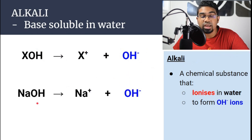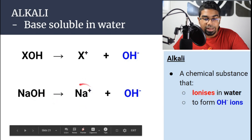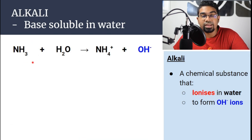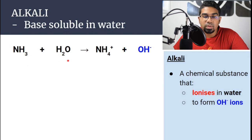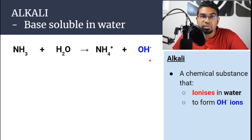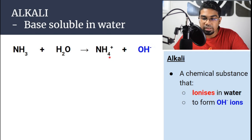For example, sodium hydroxide: when sodium hydroxide is dissolved in water, we get Na+ and OH⁻. This is also in accordance with Arrhenius theory. Another example is ammonia, NH₃. When we dissolve ammonia in water as aqueous ammonia, we get ammonium ion NH₄+ and OH⁻. This is, again, by dative bonding.